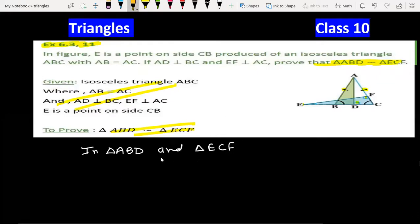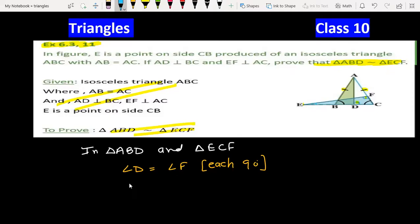In both triangles you can see angle D equals angle F, each 90 degrees. But the other thing we have to show is that angle B equals angle C. This was the main thing and the question will be finished.